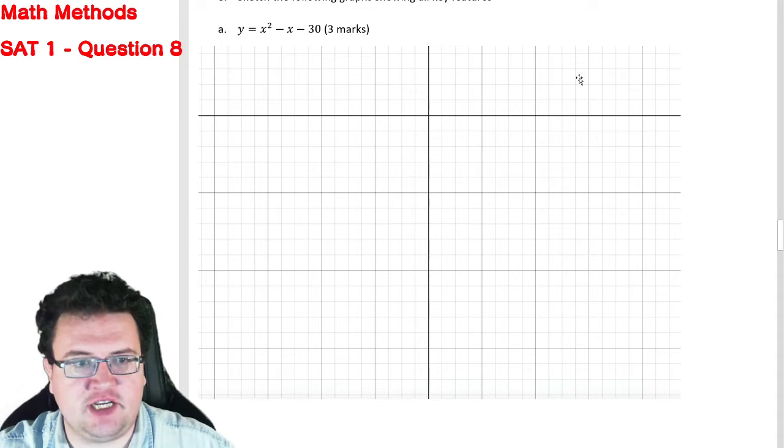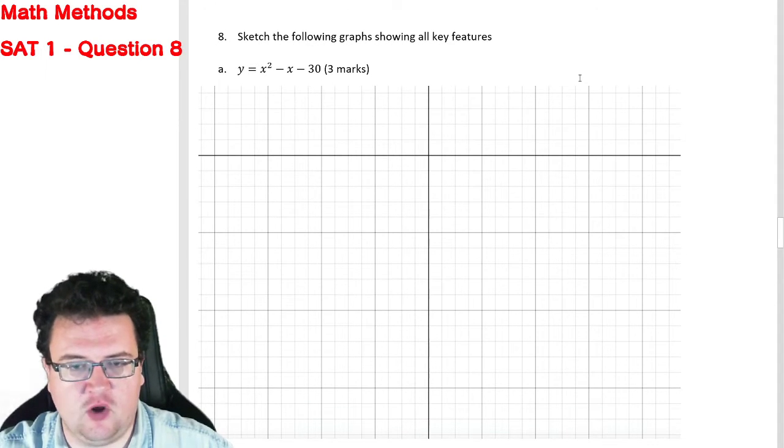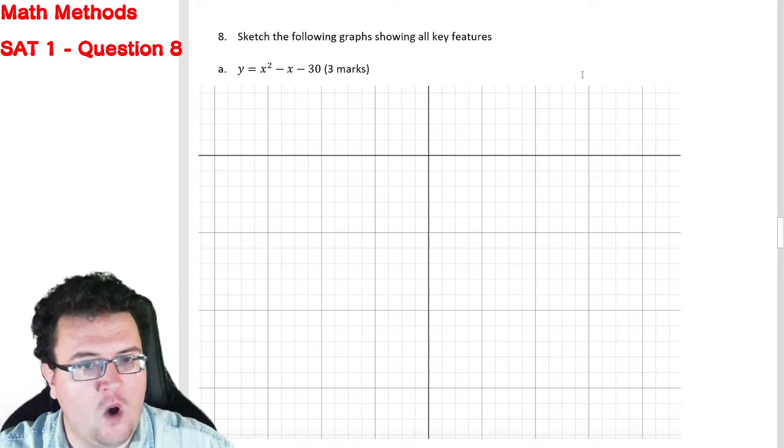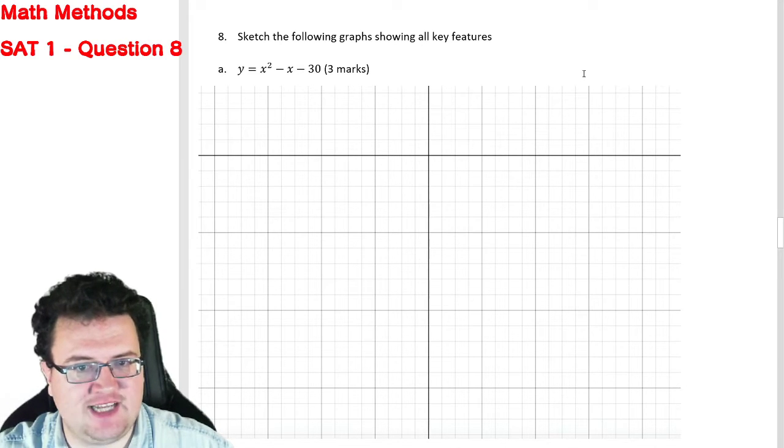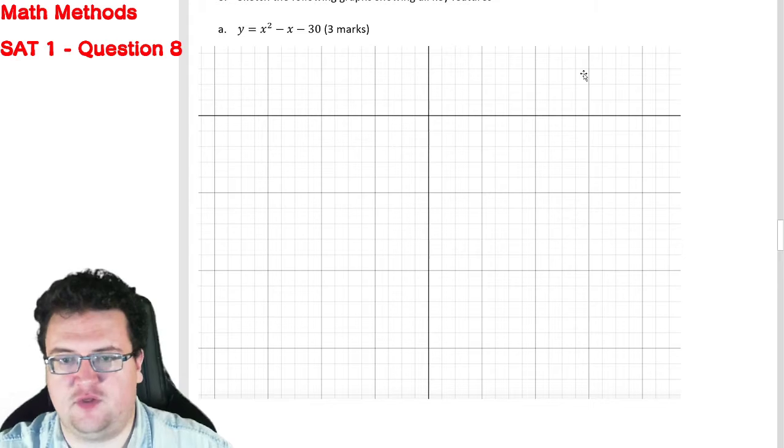Welcome to question 8, where the question is sketch the following graphs showing all key features. y equals x squared minus x minus 30, and it is worth three marks.